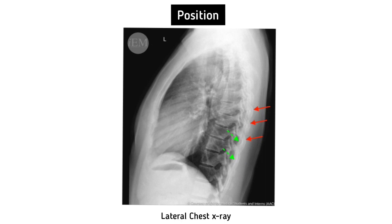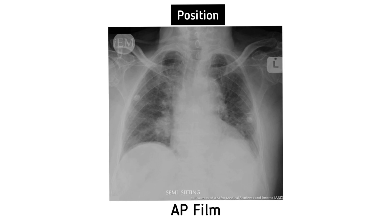On the lateral chest x-ray, the right ribs are represented by the red arrows and the left ribs by the green arrows. On the AP film, the heart and mediastinal shadow are magnified because of anterior structures — mainly the sternum. This view is mostly taken at bedside as a portable film. The AP x-ray shows magnification of the heart and widening of the mediastinum.